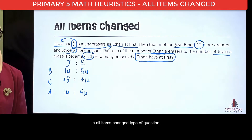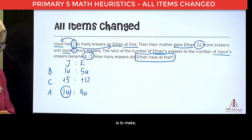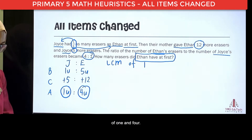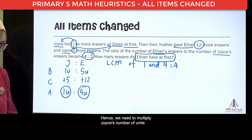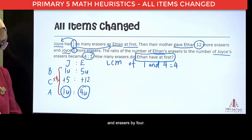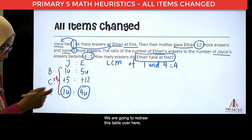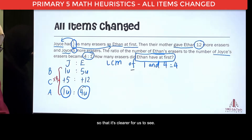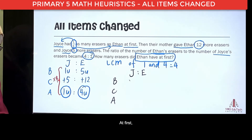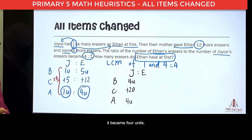In all items change type of question, what we need to do is to make the last unit to be equal. As such, we need to find the lowest common multiple of 1 and 4, and that is 4. Hence, we need to multiply Joyce's number of units and erasers by 4. We are going to redraw this table so that it's clearer. So, Joyce is to Ethan — before change, after. We have to multiply Joyce's quantities by 4. So, at first it was 4 units, the change involved was 20 erasers, and in the end it became 4 units.